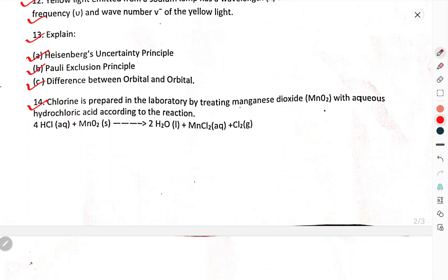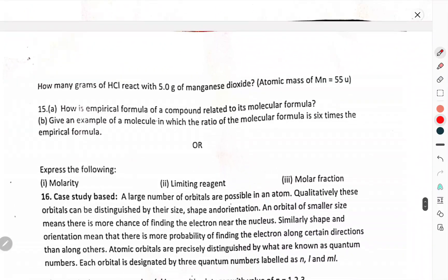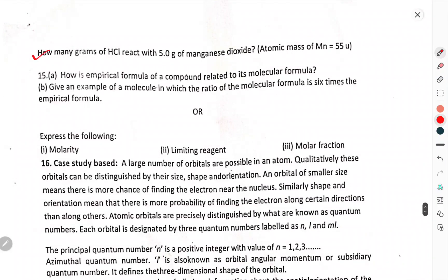Chlorine is prepared in the laboratory by treating manganese dioxide with aqueous hydrochloric acid according to the reaction: 4 HCl + MnO2 → 2 H2O + MnCl2 + Cl2. How many grams of HCl reacts with 5 grams of manganese dioxide? Atomic number of manganese is 55.